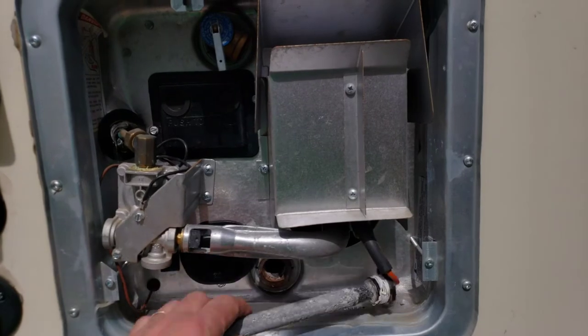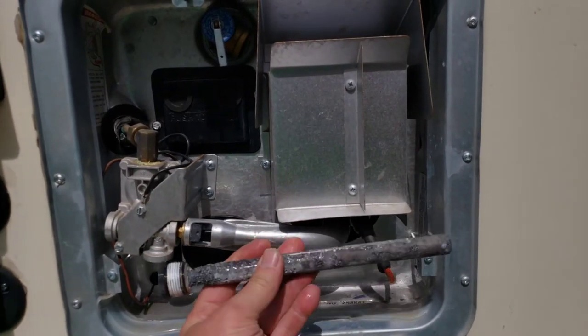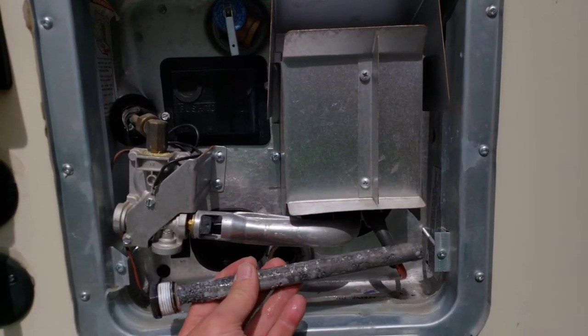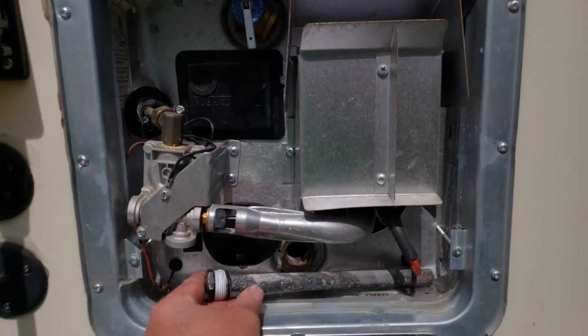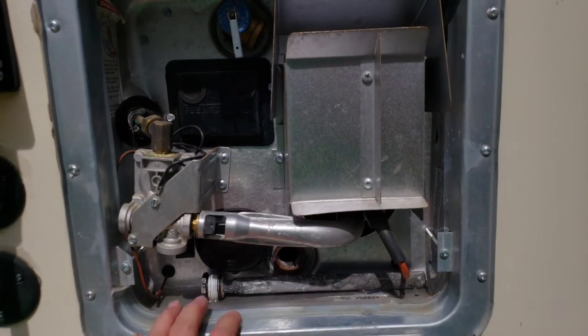Now these tanks are metal, so they give us an anode rod, which sacrifices itself so that your tank does not corrode. And they require a 1 and 1/16th inch socket to take them in and out.